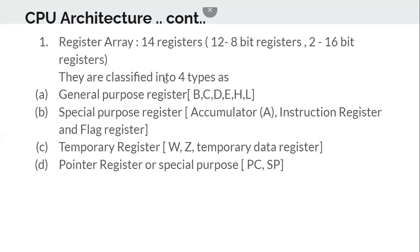The register array consists of 14 registers. Of these, 12 are 8-bit registers and 2 are 16-bit registers, because they are used for addressing memory and memory addresses consist of 16 bits — again, I'm talking about the 8085 only. These registers are classified into general purpose registers, special purpose registers, temporary registers, and pointer or memory address registers.